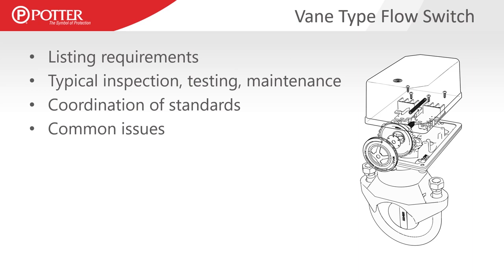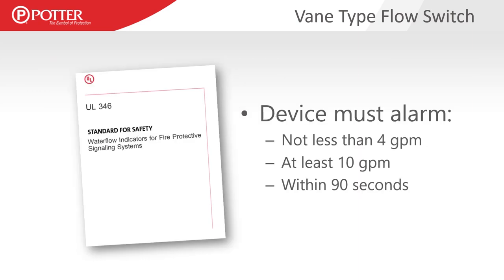We'll do this for each category of devices as we go through. This is the typical flow for vein type flow switches, pressure switches, tamper switches, and then a couple of other devices that supervise or monitor sprinkler systems. Regarding listing requirements for a vein type flow switch — it's important to understand how these devices must operate to meet UL listing, the UL 346 listing for water flow indicators.